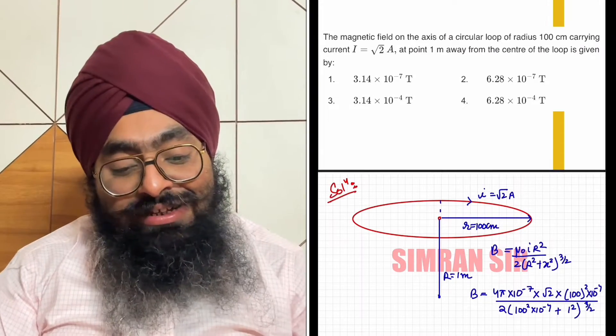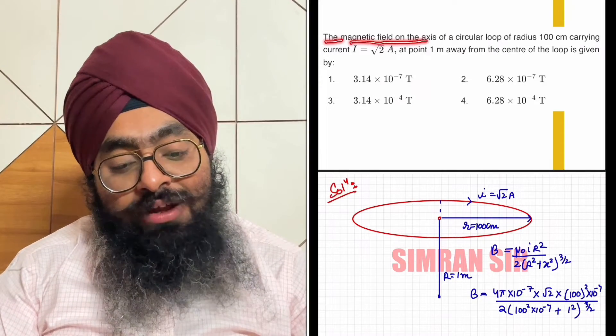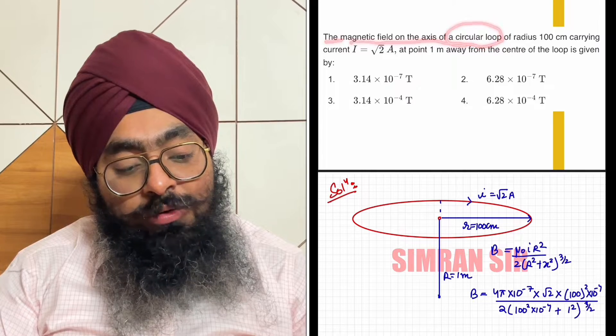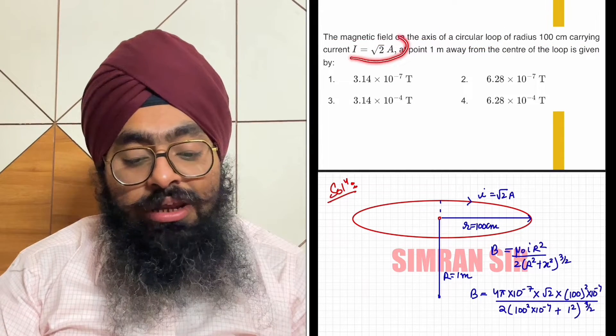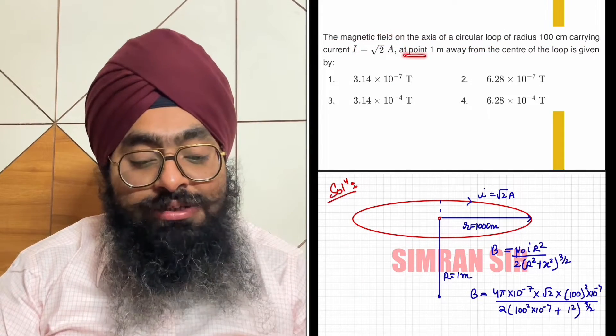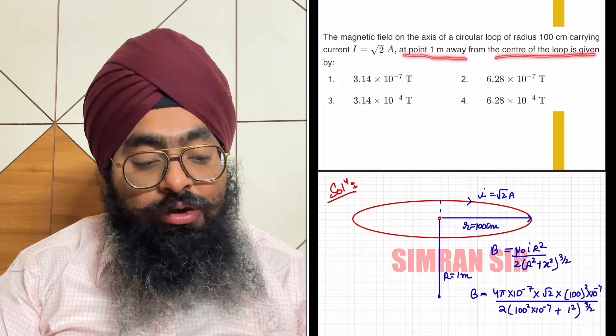Hello dear students, let us solve this question. The magnetic field on the axis of a circular loop of radius 100 cm carrying current I equals root 2 amperes at 0.1 meter away from the center of the loop is given by: